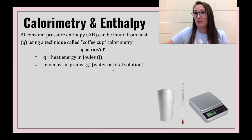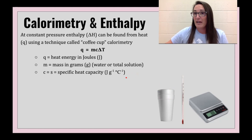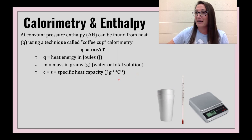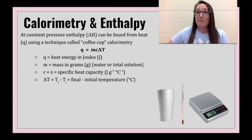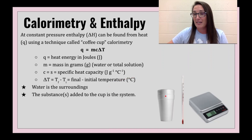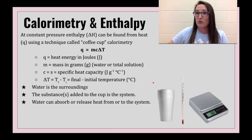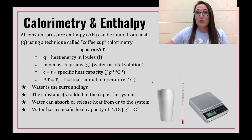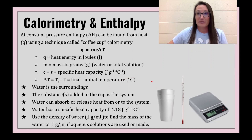Mass in grams is either the water or the total solution in the calorimeter. C, or specific heat capacity, will typically be water's value — we're not doing this for metals, but for a reaction or solution. We measure the temperature change (final minus initial). The water is the surroundings, and the substance placed in the calorimeter is the system. Water can absorb or release heat to or from the system, and we use water's heat capacity of 4.18 joules per gram per degree Celsius.